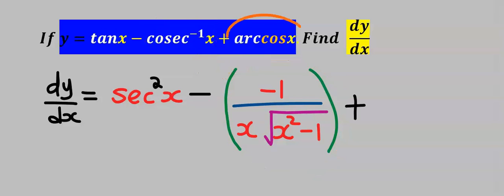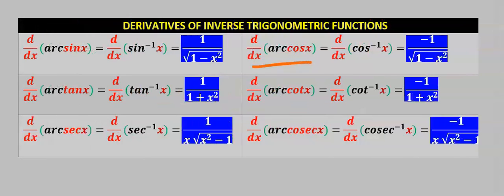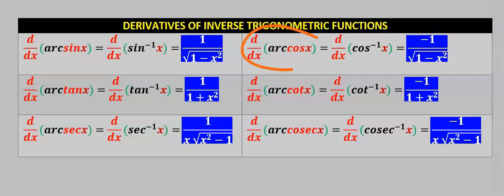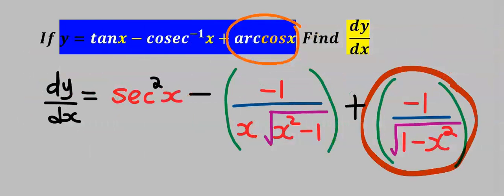Next, let's find the derivative of arccos x. Arccos x is the same thing as cos inverse of x. When you differentiate arccos x, you get minus 1 divided by the square root of 1 minus x squared. This becomes the derivative of arccos x, which is the same as cos inverse of x.